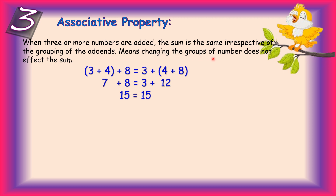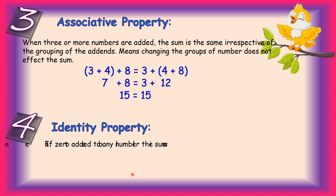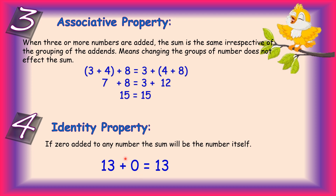Changing the groups of the numbers does not affect the sum. The fourth property is the identity property. Here, the identity is the number 0, which has no value. So whenever we add 0 to any number, the sum will be the number itself. For example: 13 plus 0 equals 13; 66 plus 0 equals 66; 57 plus 0 equals 57. Whenever we add 0 to any number, the value remains the same — the sum is the number itself.